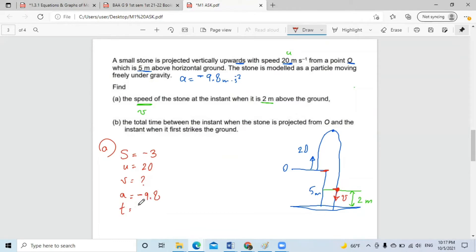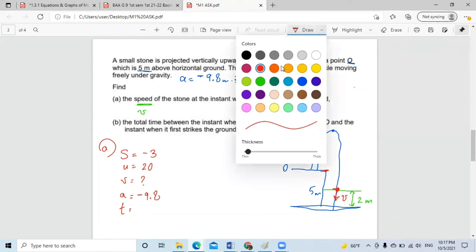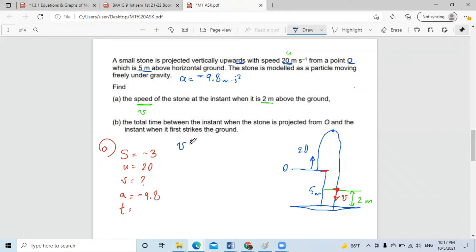And the acceleration is negative 9.8. So the equation that has no T, it will be V squared equals U squared plus 2AS. So V squared equals U squared plus 2AS. Now I need to find V. So V equals square root of the whole thing. How much is U? It's 20 squared plus two multiplied by negative 9.8 multiplied by the distance, which is negative three.